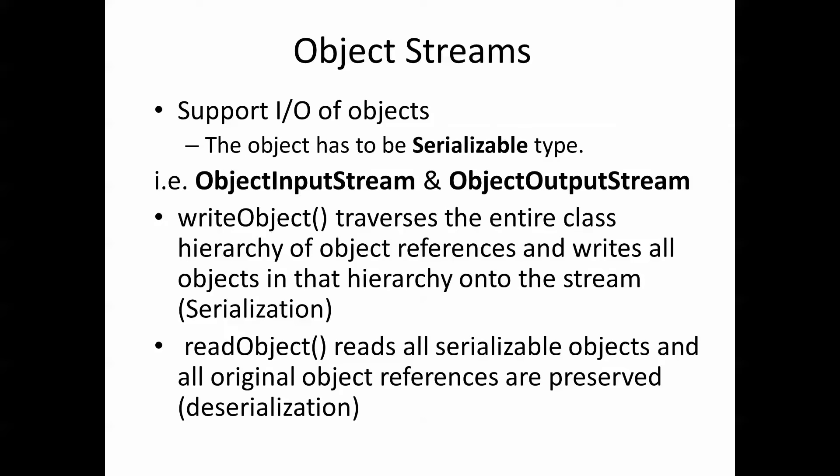The key here is that the object you're writing has to be of type Serializable, and we'll see that in a couple of minutes. The examples are ObjectInputStream and ObjectOutputStream. When we use ObjectOutputStream, the writeObject method traverses the entire class hierarchy of object references and writes all objects in that hierarchy onto the stream — this is known as serialization. When we use ObjectInputStream, the readObject method reads all serializable objects and all original object references are preserved, which is deserialization.